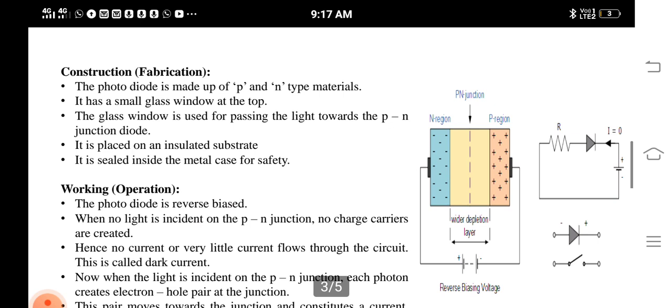The construction of photodiodes: The photodiode is made up of P and N type materials. It has a small glass window at the top. The glass window is used for passing the light towards the PN junction diode. It is placed on an insulated substrate and sealed inside a metal case for safety.